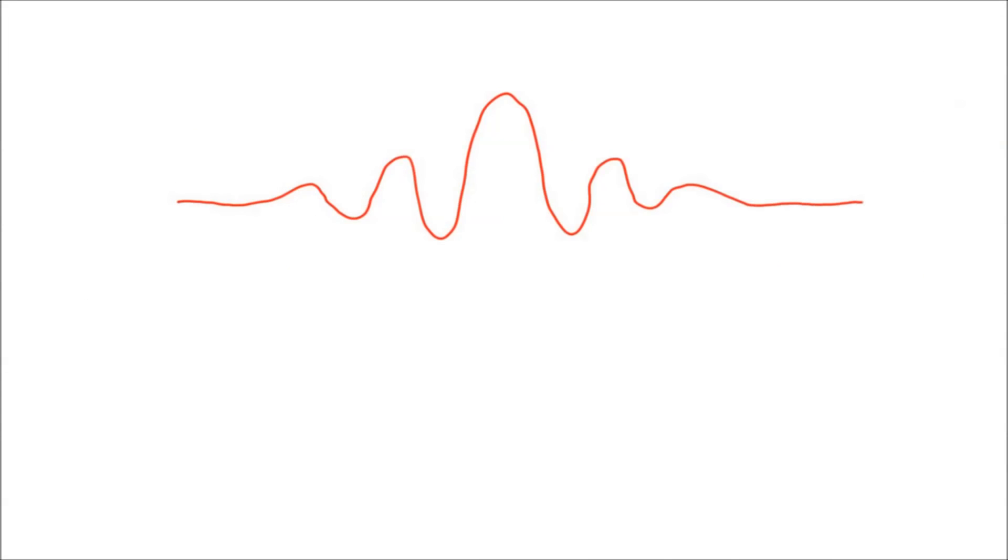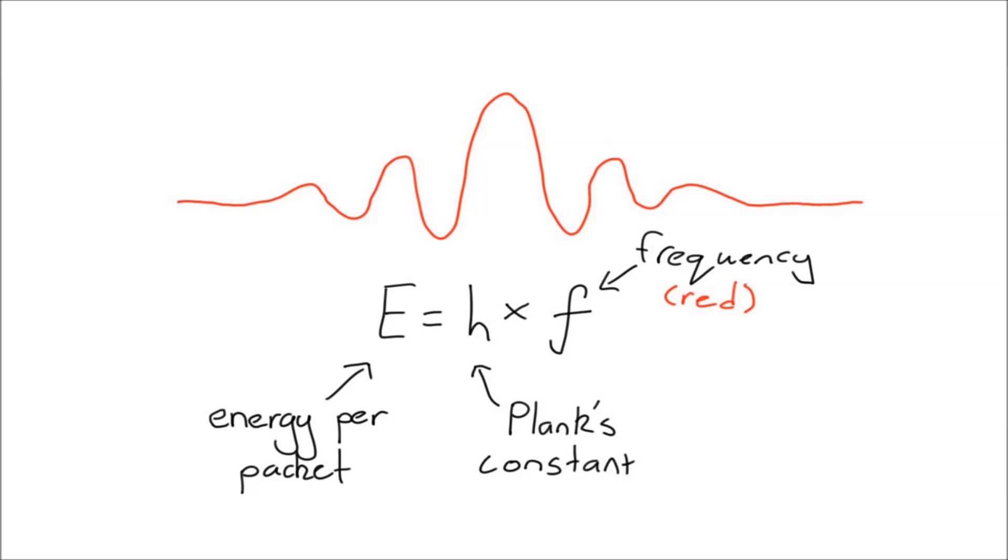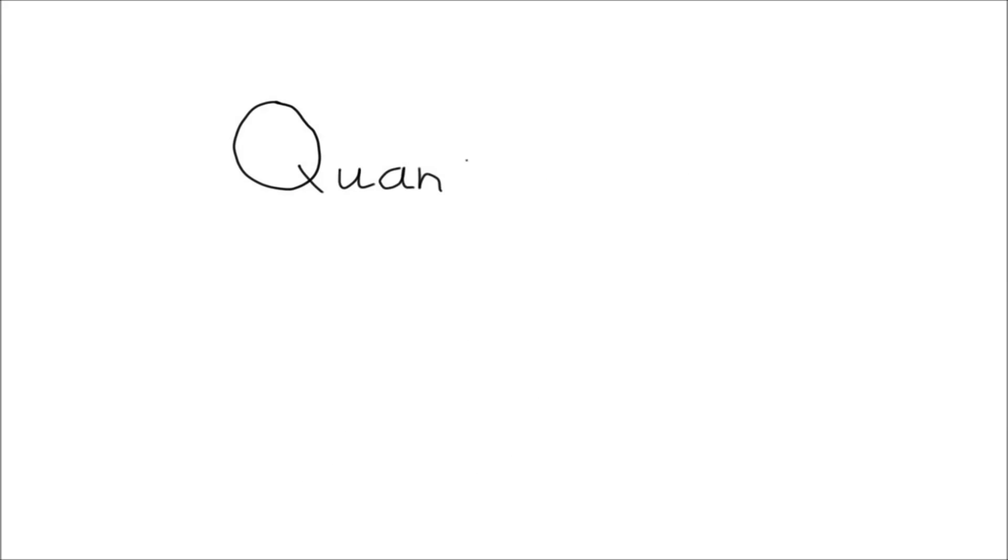For a beam of a particular color, this amount of energy is always constant. This modern theory of light is known as quantum electrodynamics, and it provides the most complete description of light that we have.